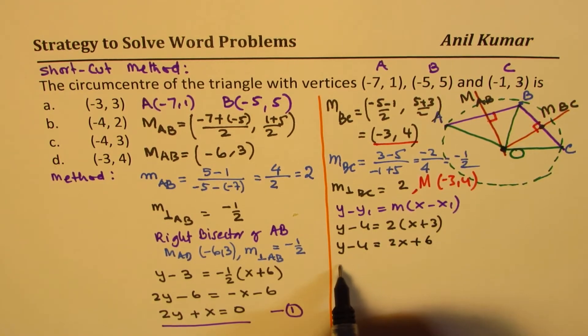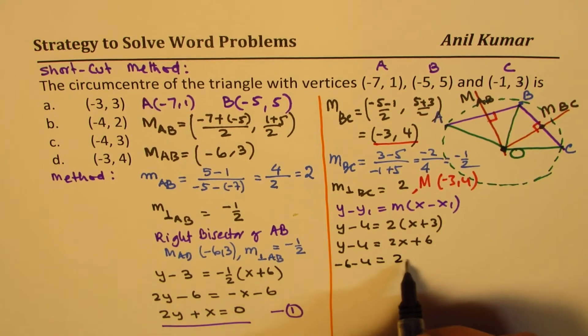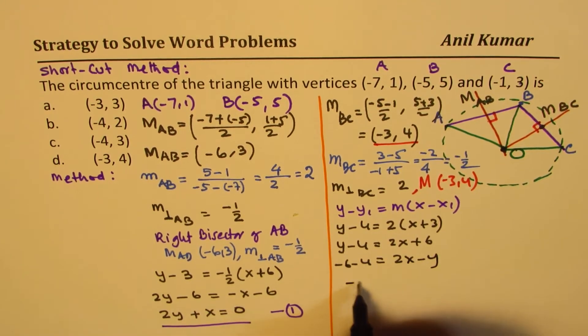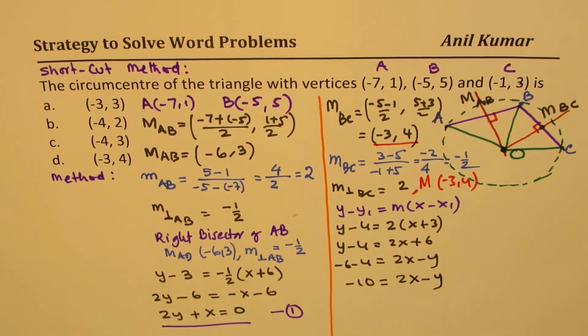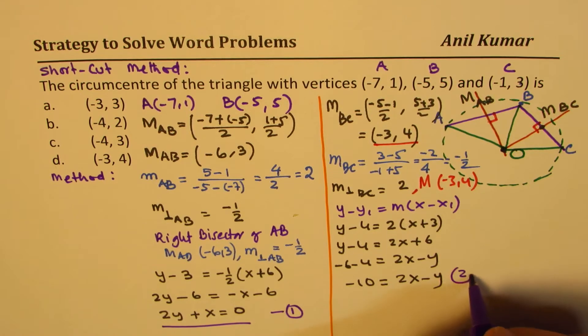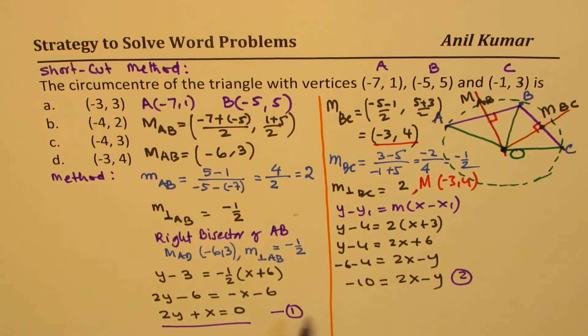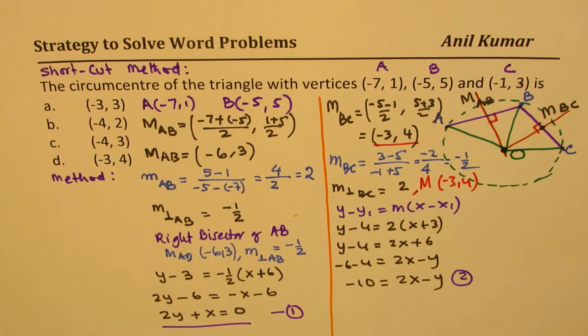-6 - 4 equals to 2x - y, -10 equals to 2x - y. So this is our second equation. Two equations, two unknowns.